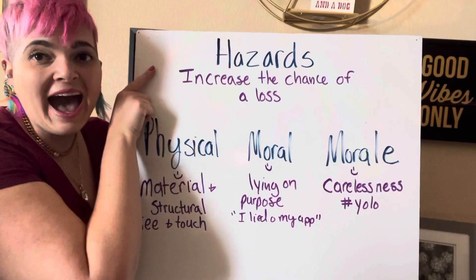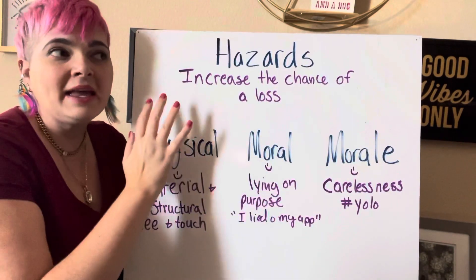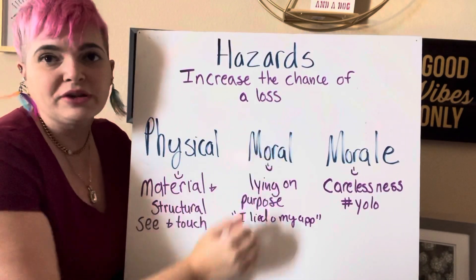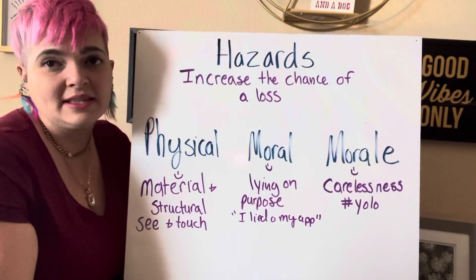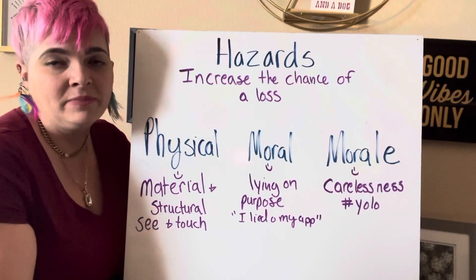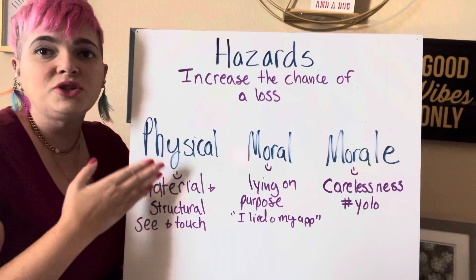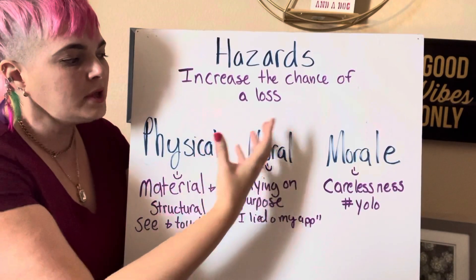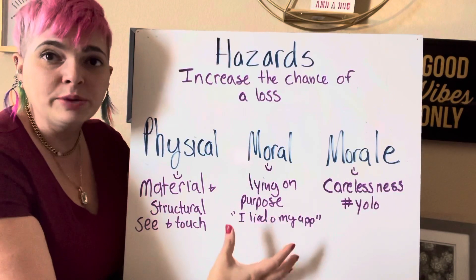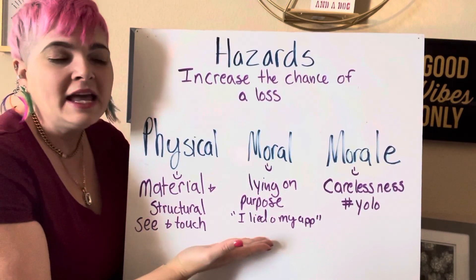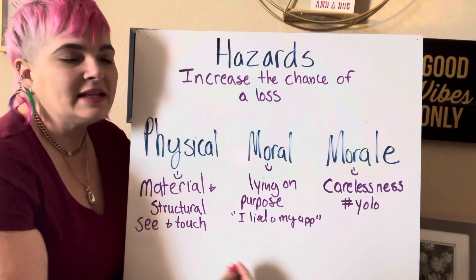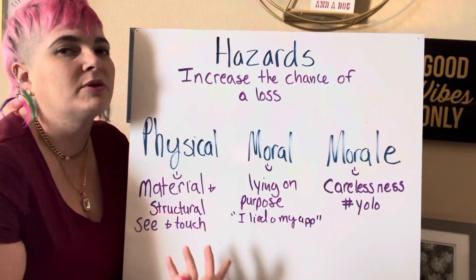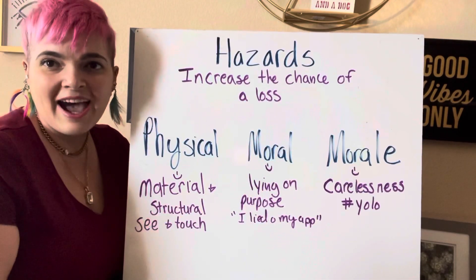In summary, hazards increase the chance of a loss — they make an accident way more likely to happen, and you want to memorize that definition for the state exam. Physical hazards are things you can see and touch — material and structural. Moral is lying on purpose, like lying on your insurance application. And morale is that sense of carelessness: I do what I want, I do whatever feels good, I don't think about the consequences.